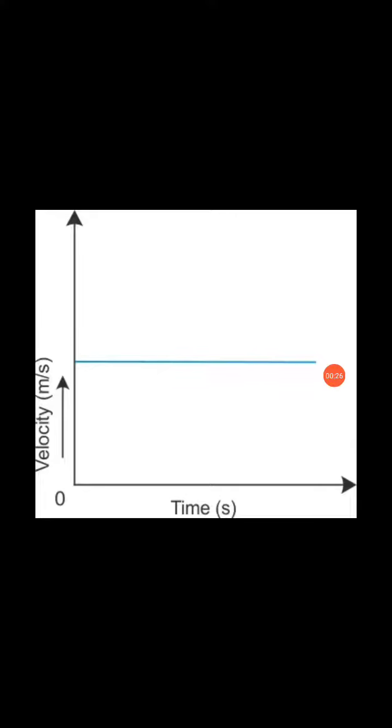The velocity-time graph of a velocity that changes uniformly is a straight line. We can use this graph to calculate the acceleration of an object. Acceleration equals change in velocity divided by time.